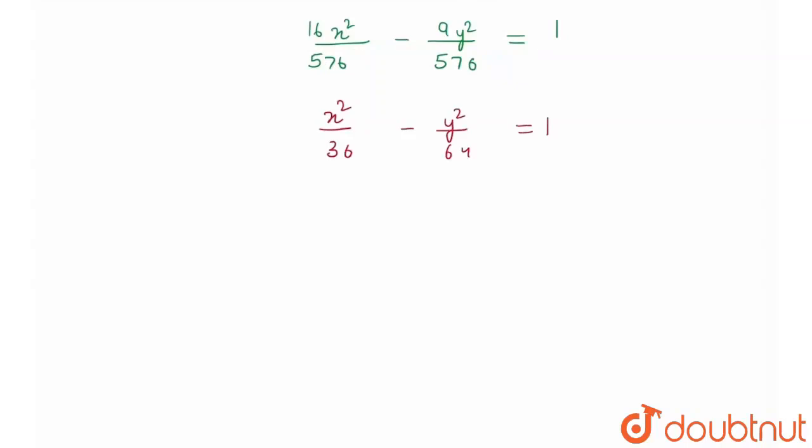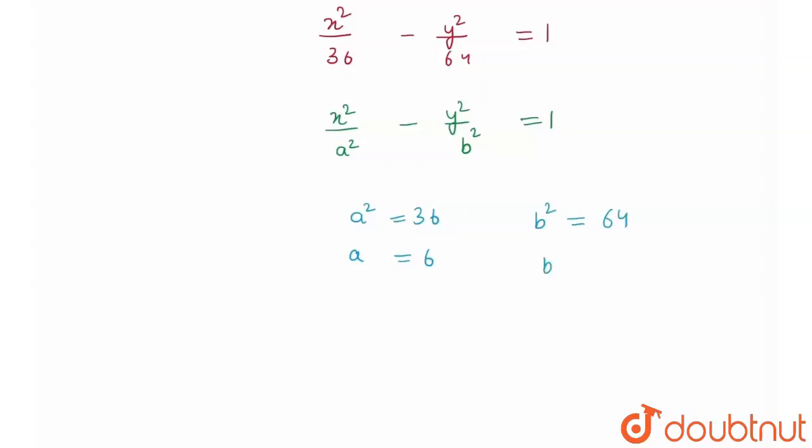So let's compare this by x squared upon a squared minus y squared upon b squared is equal to 1. So by comparing this, what will I get? I'll get a squared is equal to 36 or my a would be equal to 6 and my b squared would be equal to 64. So my b would be equal to 8.